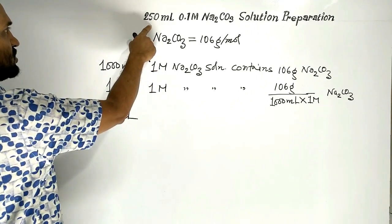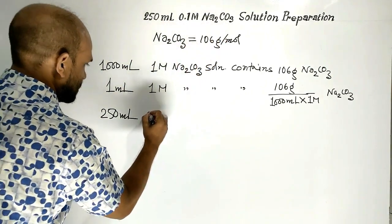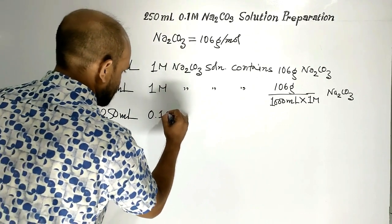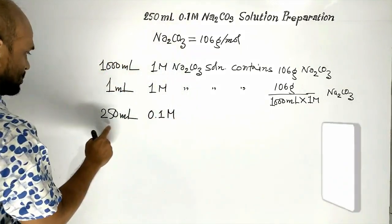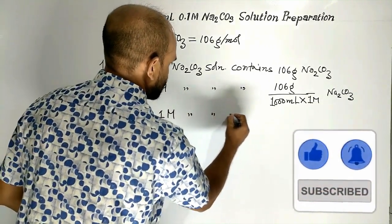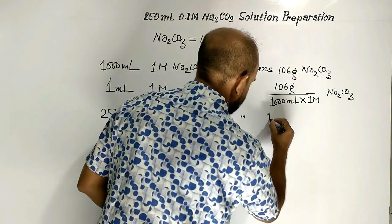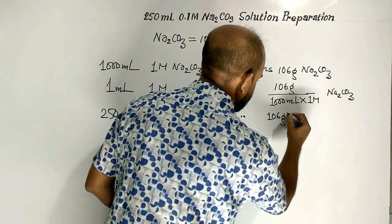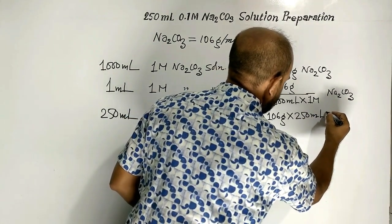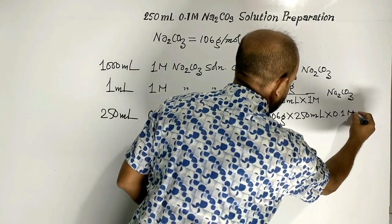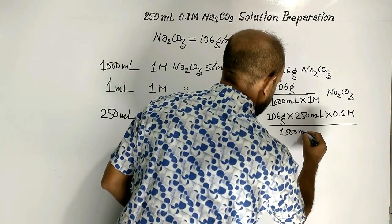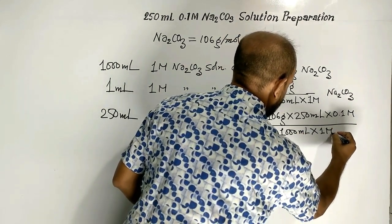We have to prepare 250 milliliter solution with a strength of 0.1 molar. So 250 milliliter 0.1 molar sodium carbonate solution contains 106 gram multiplied by 250 milliliter multiplied by 0.1 molar, divided by 1000 milliliter into 1 molar.